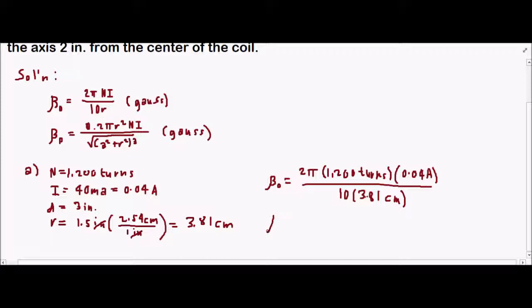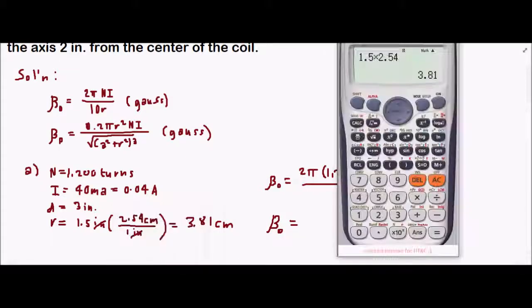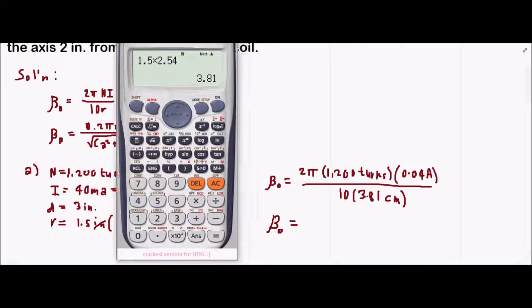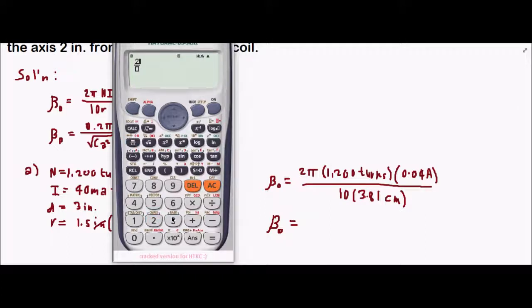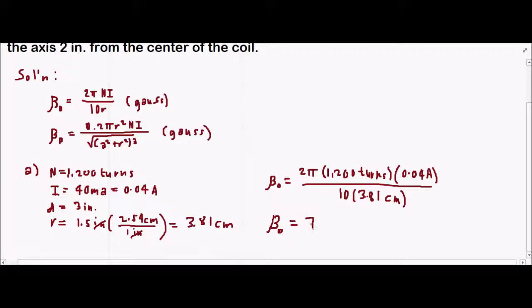Now we can solve for our flux density at the center of the coil. That is 2π times 1,200 times 0.04 over 10 times 3.81, which gives us 7.91 gauss.